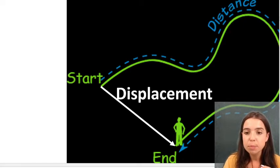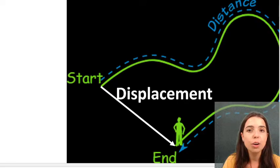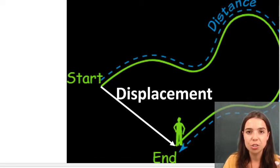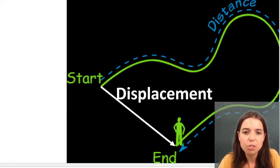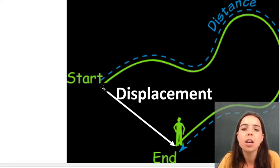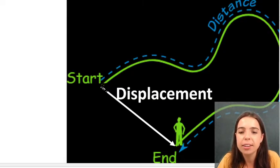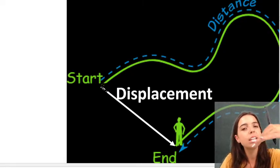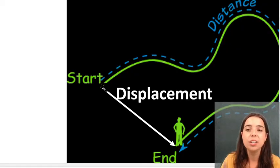But displacement is the difference in position. So it's your final position minus your initial position. It's your difference in position. So if this is your initial position over here, this is my initial position. This is your final position. I know you walked all the way along the green path. That is effectively your distance. But your displacement is you started here, you ended here.